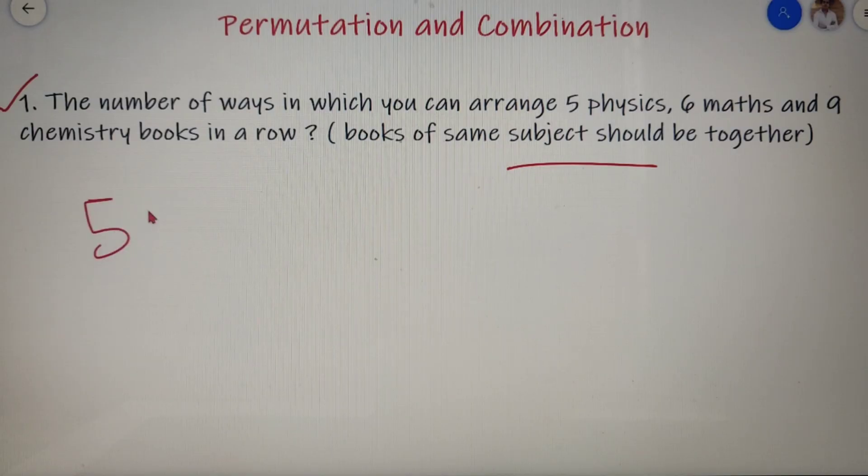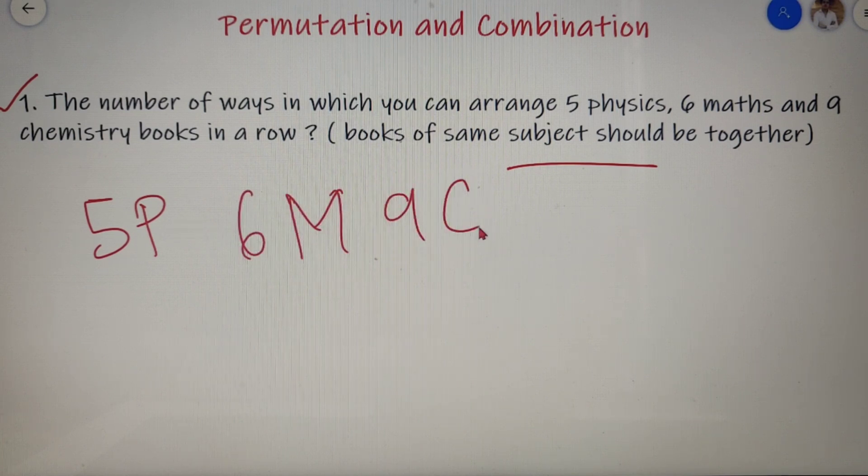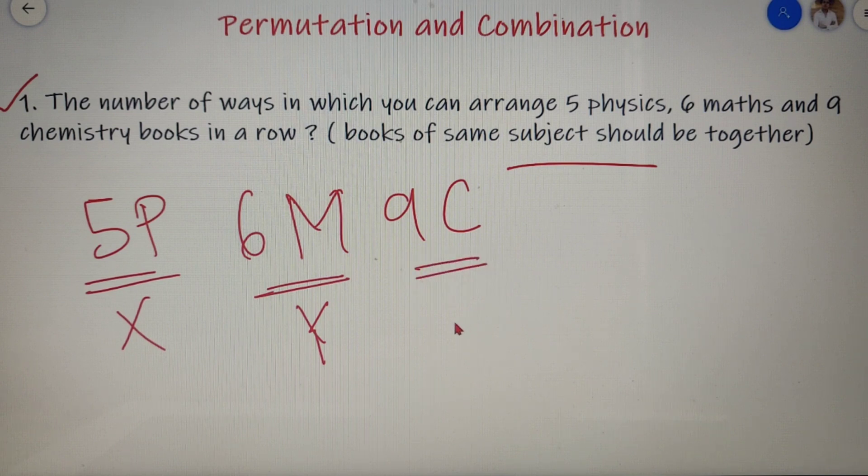So we have 5 physics books, 6 maths books, and 9 chemistry books. We can take the physics books as a single unit as X, maths books as a single unit as Y, and chemistry books as a single unit as Z. Now I have 3 different units X, Y, and Z, and I know that I can arrange 3 different objects in a row in 3 factorial ways.